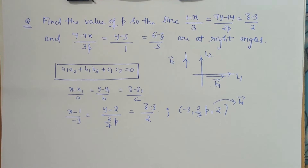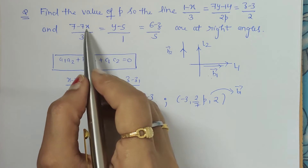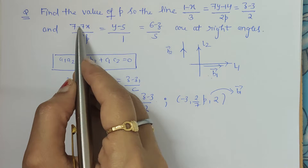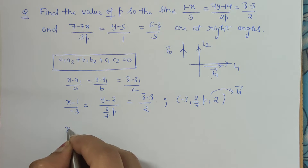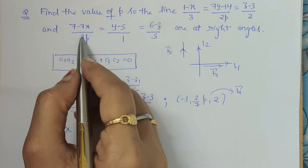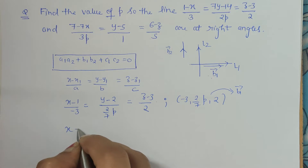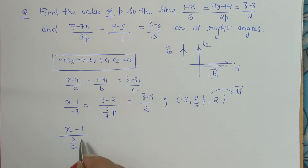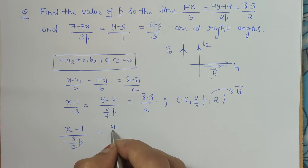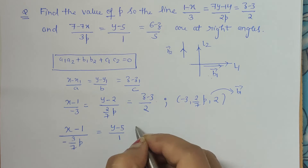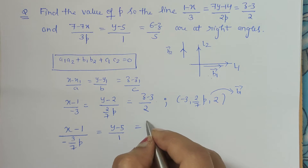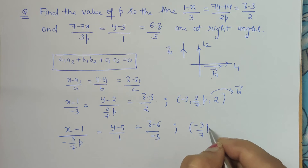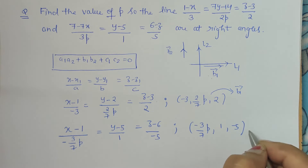Similarly for the second line, we write the x term first and take the minus sign common, also taking out 7, which shifts to the denominator. This gives (x − 1)/(−3/7p) = (y − 5)/1 = (z − 6)/(−5), after taking minus sign common for the z term as well. So the direction ratios for b2 are: −3/7p, 1, and −5.